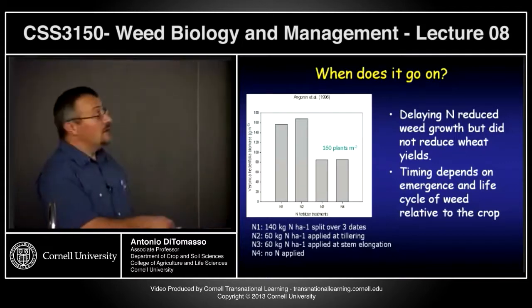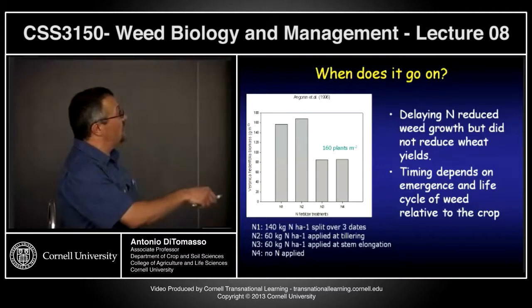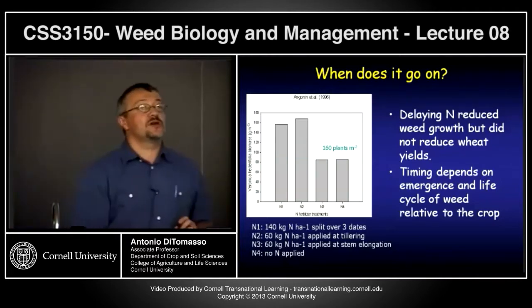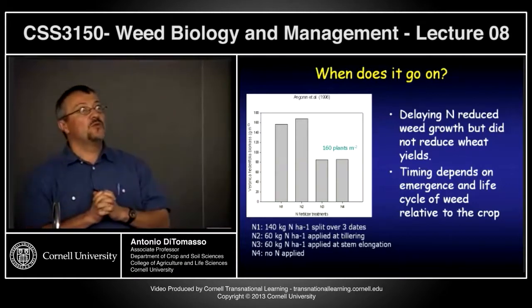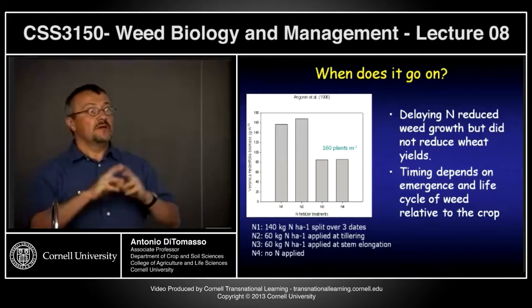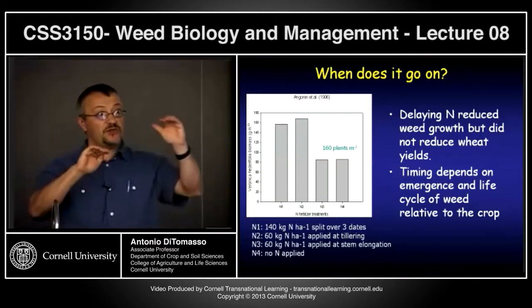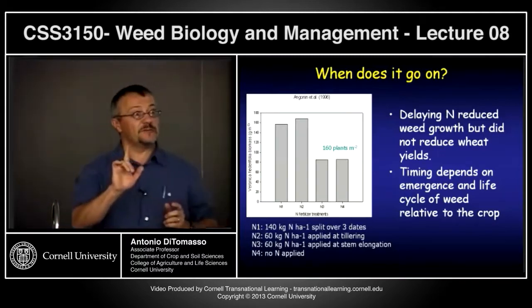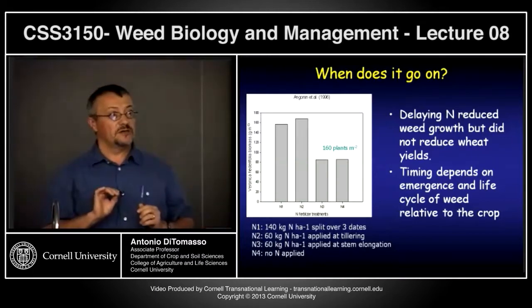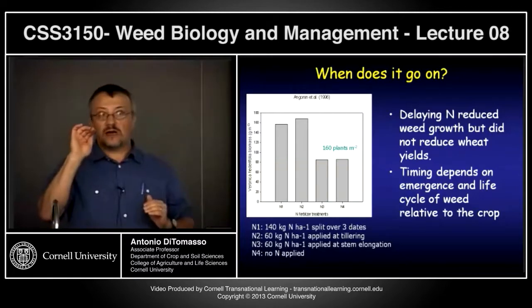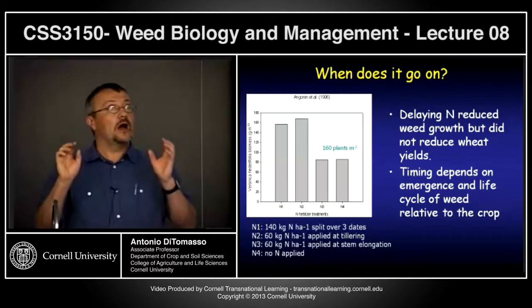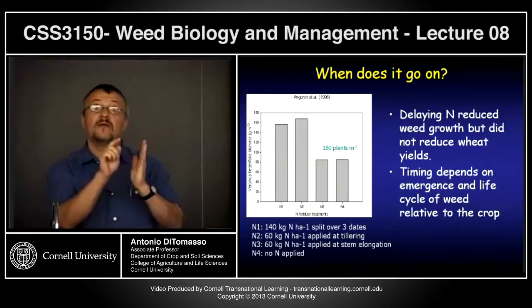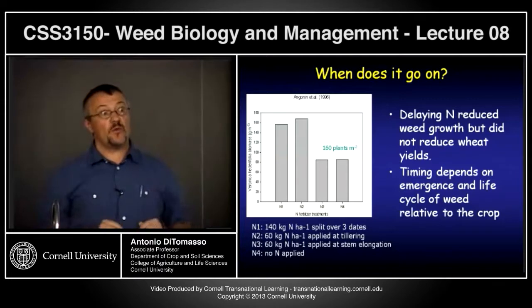When you apply nitrogen will depend on the emergence and life cycle of the weed relative to the crop. Here's a question: what is more important in reducing your crop yield — the relative emergence time of your weed relative to your crop, or the distance the weed is from your crop? A weed that emerges at about the same time as your crop versus a weed that's very close but emerges much later — which causes greater yield reduction?